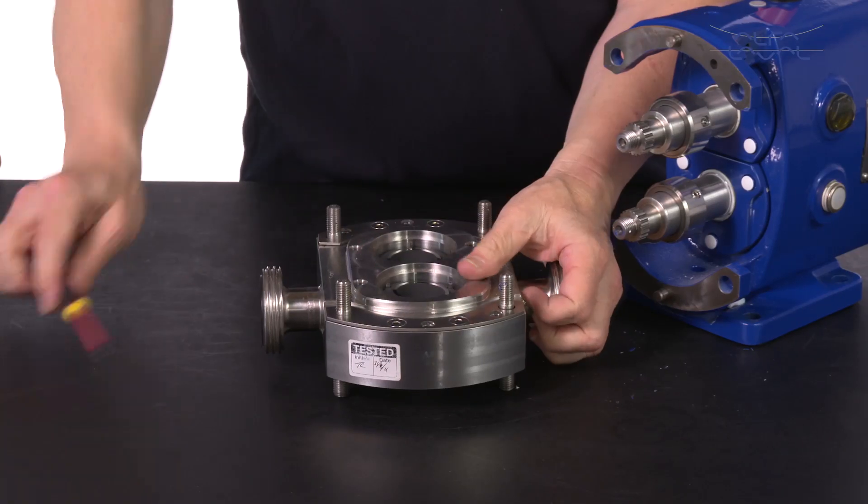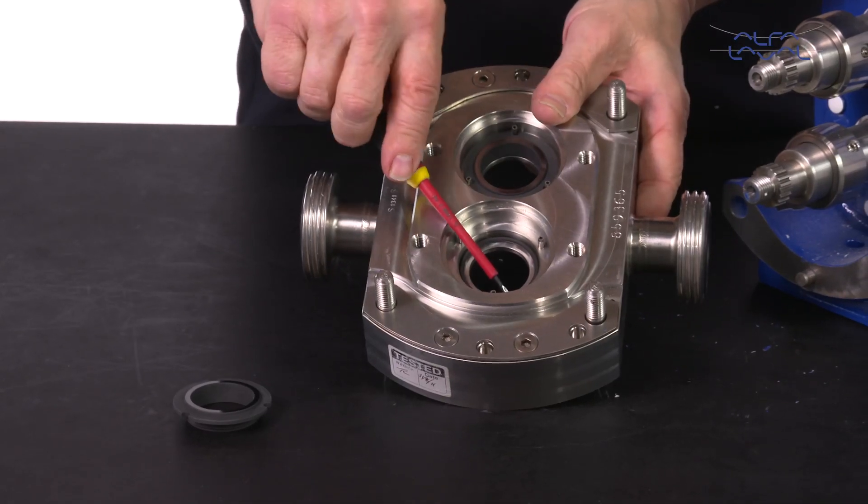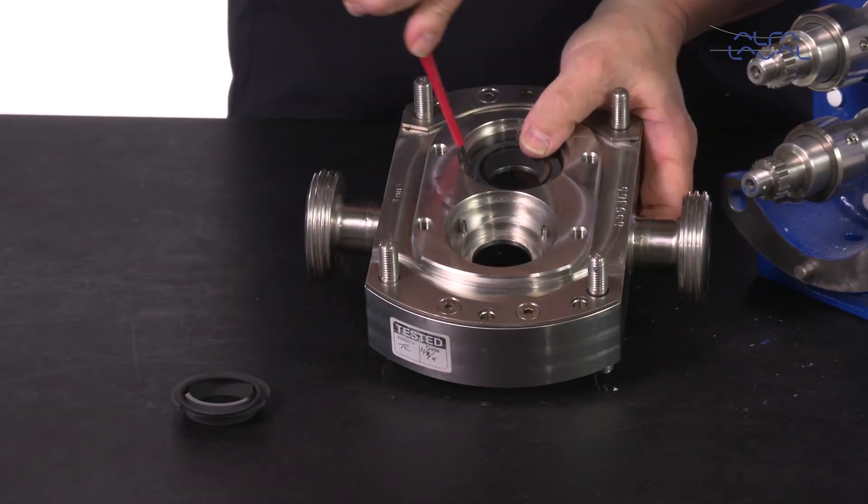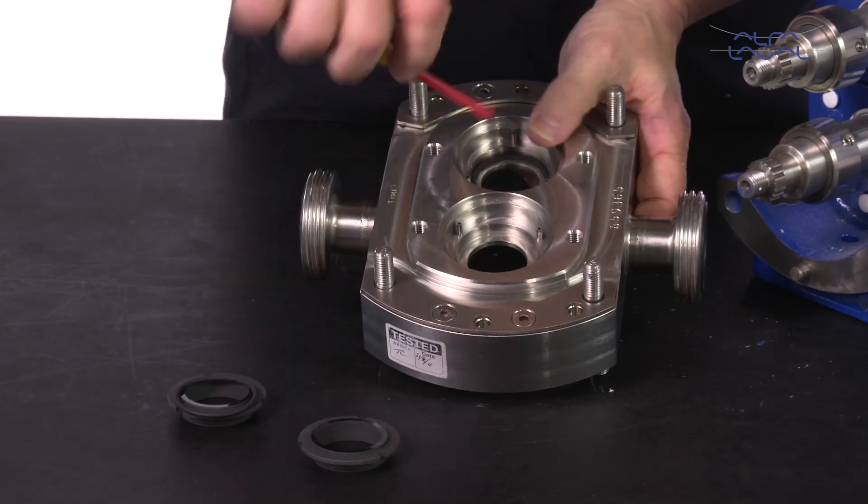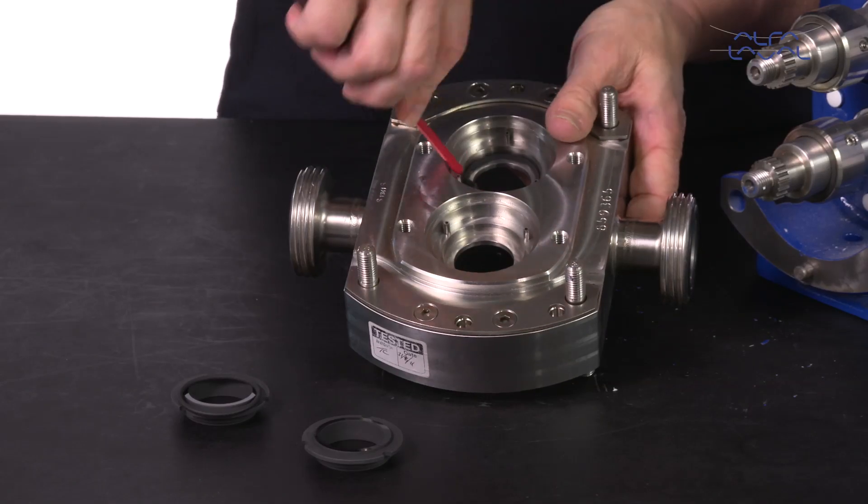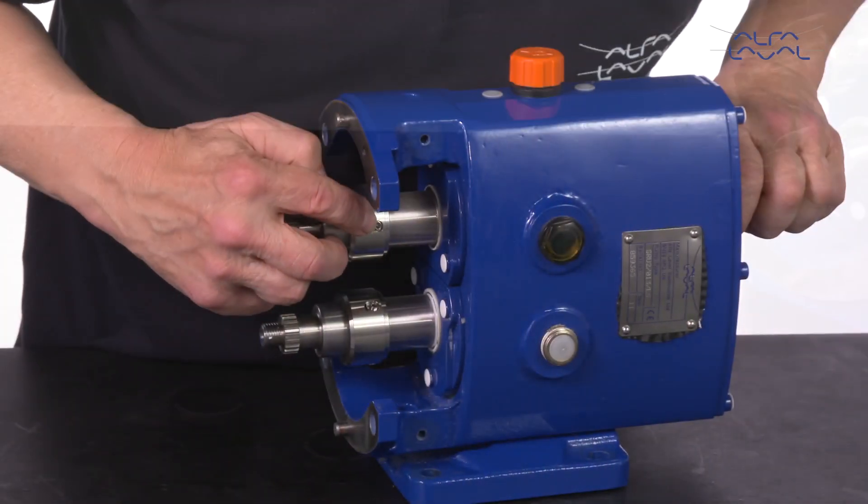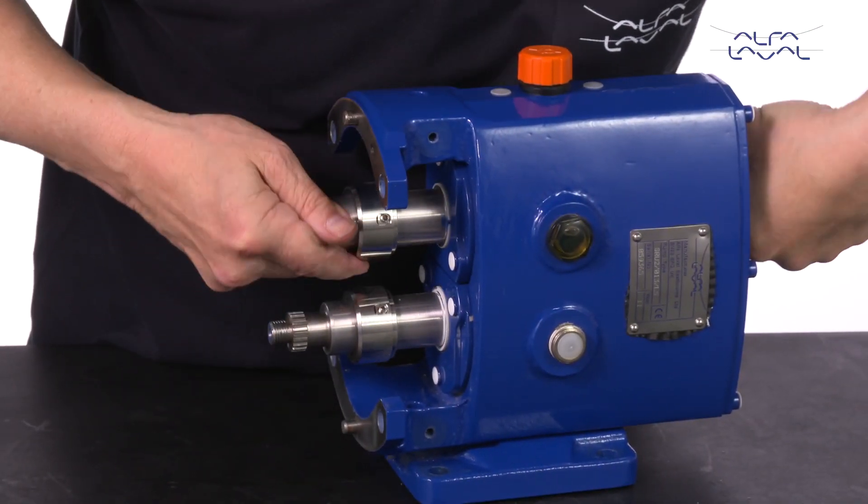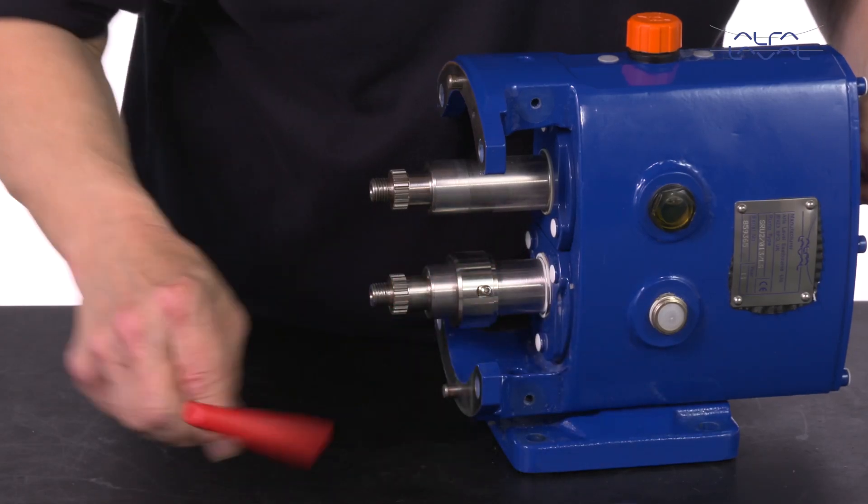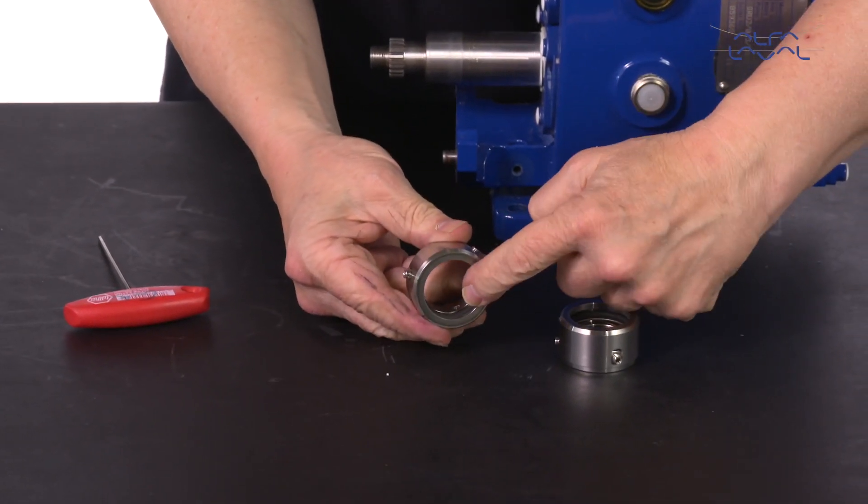Now extract the stationary seal rings and O-rings from the rotor case. Unscrew the grub screw on the rotating shaft seal and remove it from the shaft. Then remove the internal O-ring.